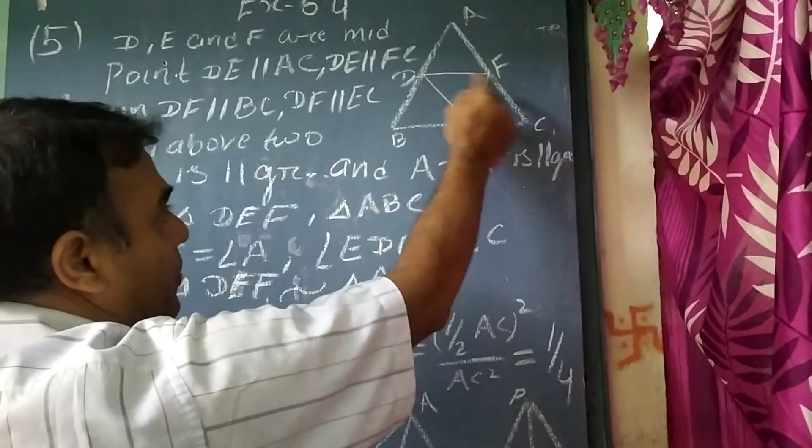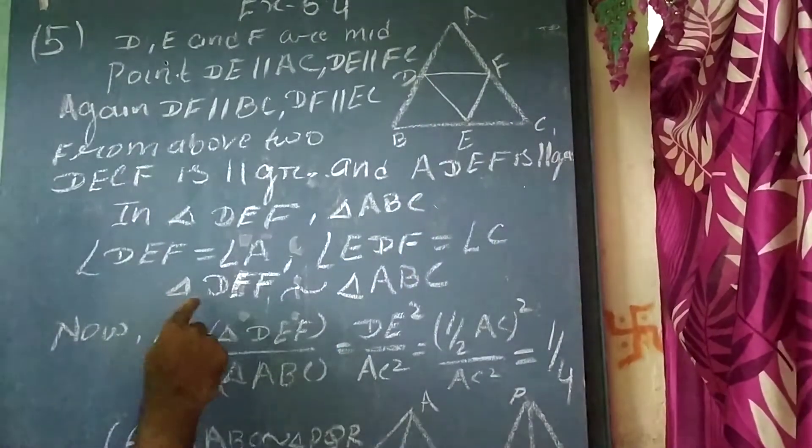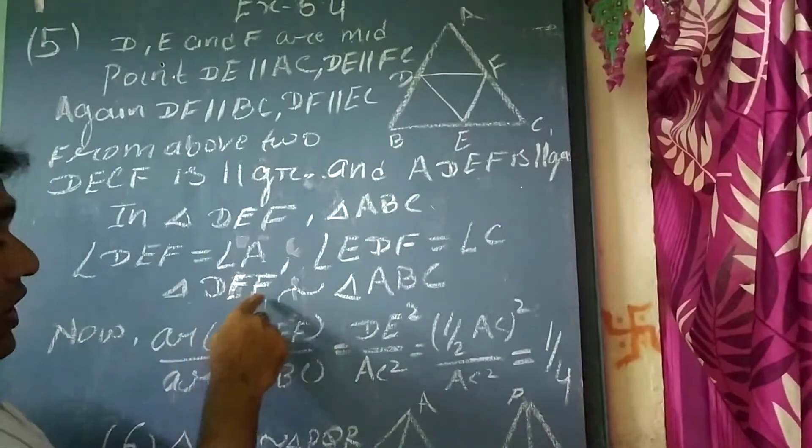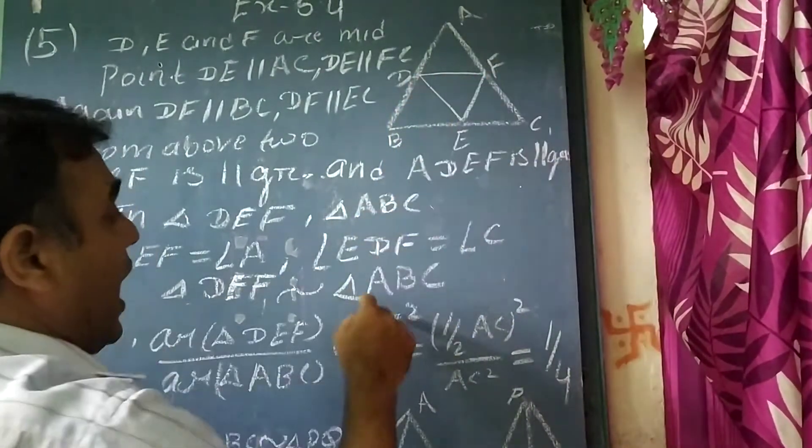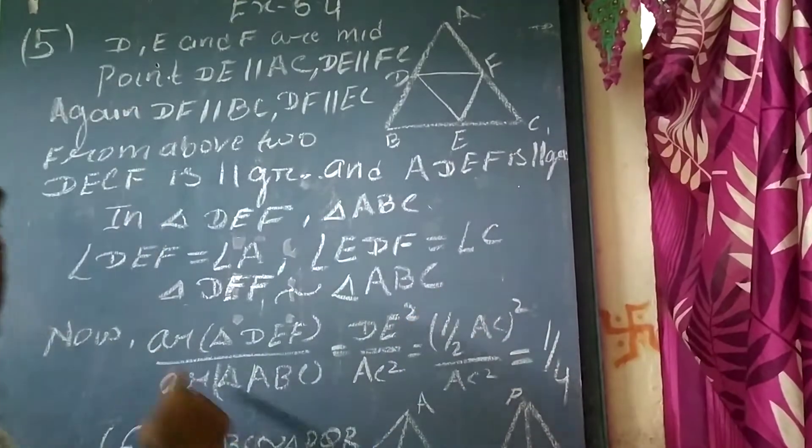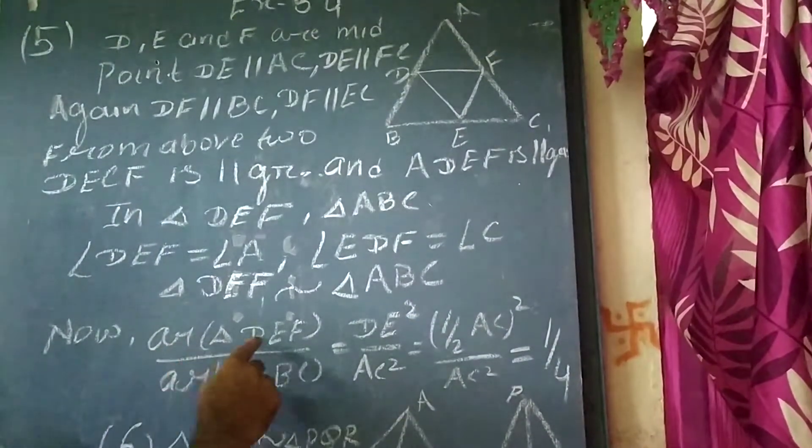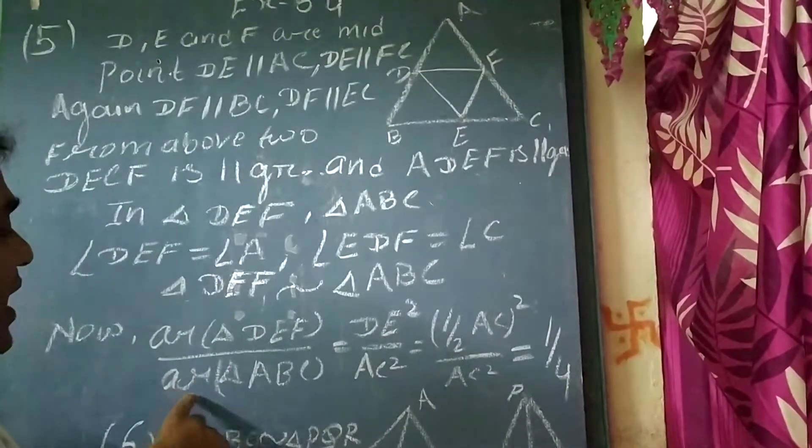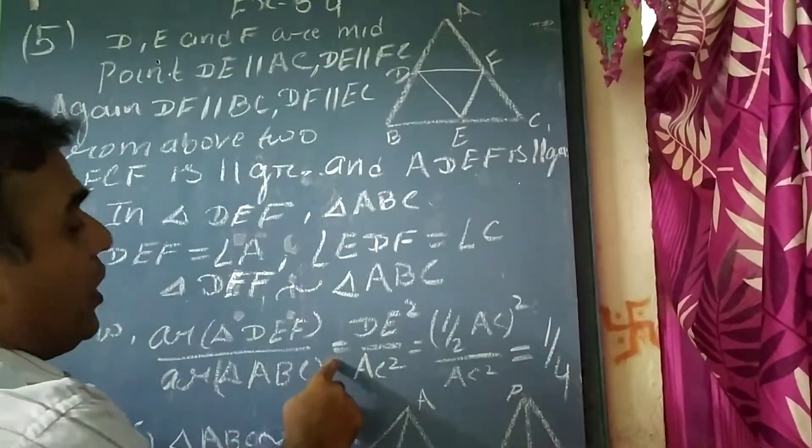So triangle DEF and ABC are similar. So now we can write the area of triangle DEF by area of triangle ABC equal to DE square by AC square.